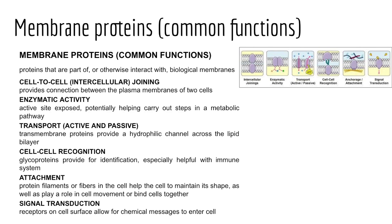Membrane proteins also function in attachment. Protein filaments or fibers may serve as membrane proteins to help maintain shape as well as play a role in cell movement or help bind cells together. Finally, we have signal transduction — some membrane proteins serve as receptors recognizing specific ligands or chemicals, and when bound by that ligand or chemical, might alter cell function in some way. We'll see this when we consider the endocrine system in the second term of our school year.